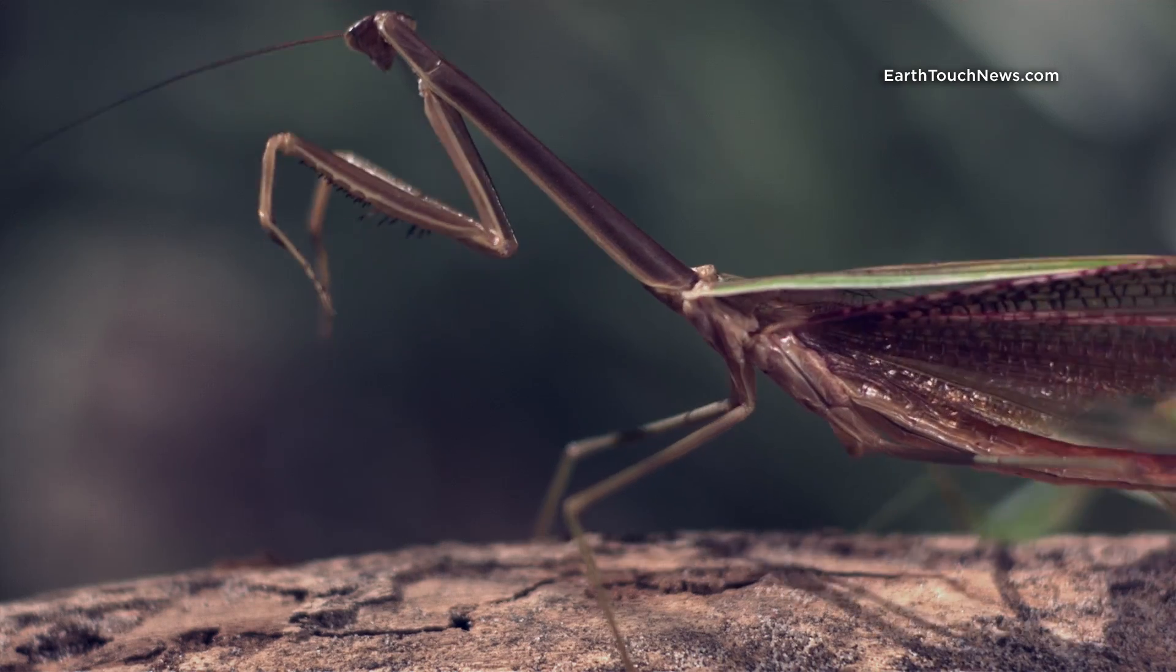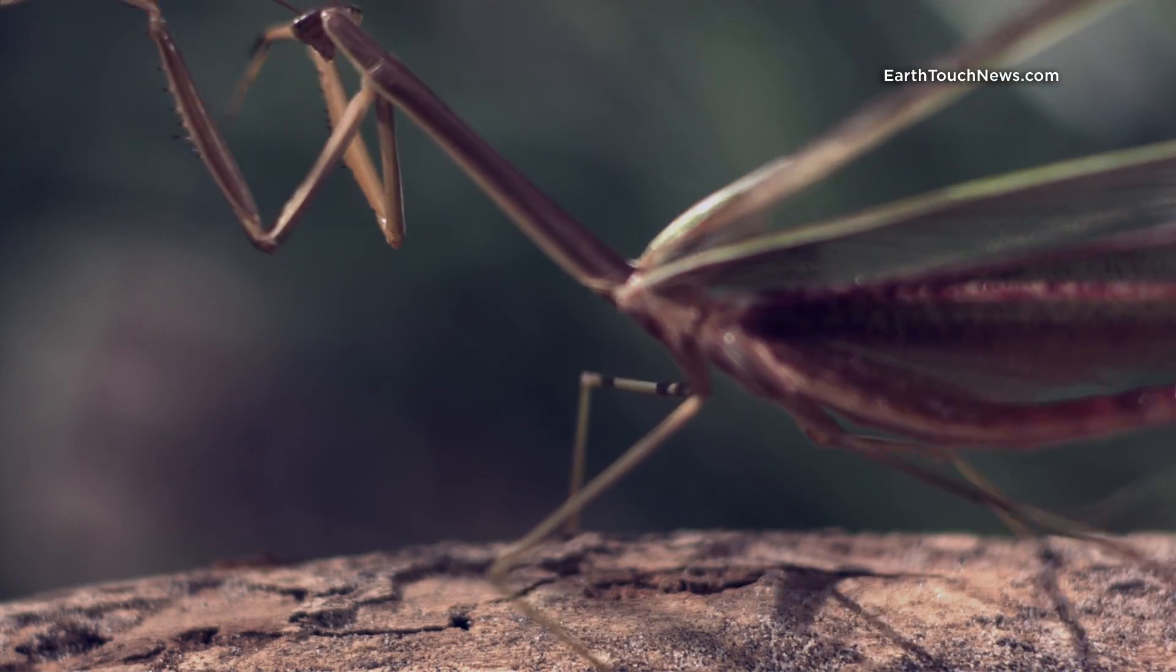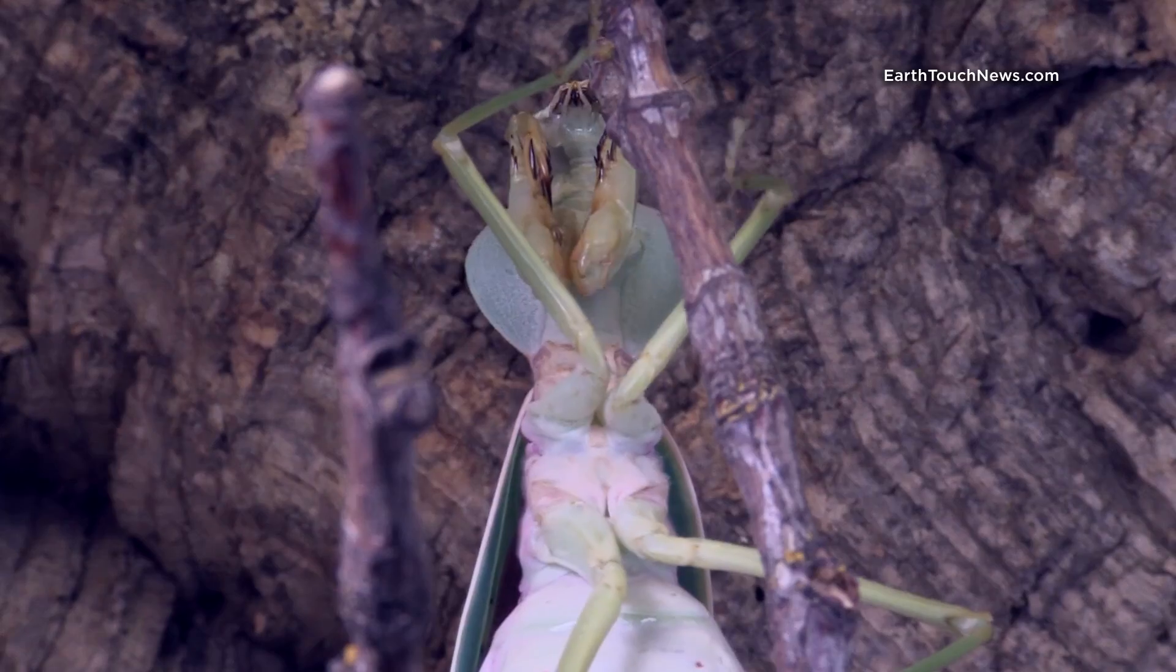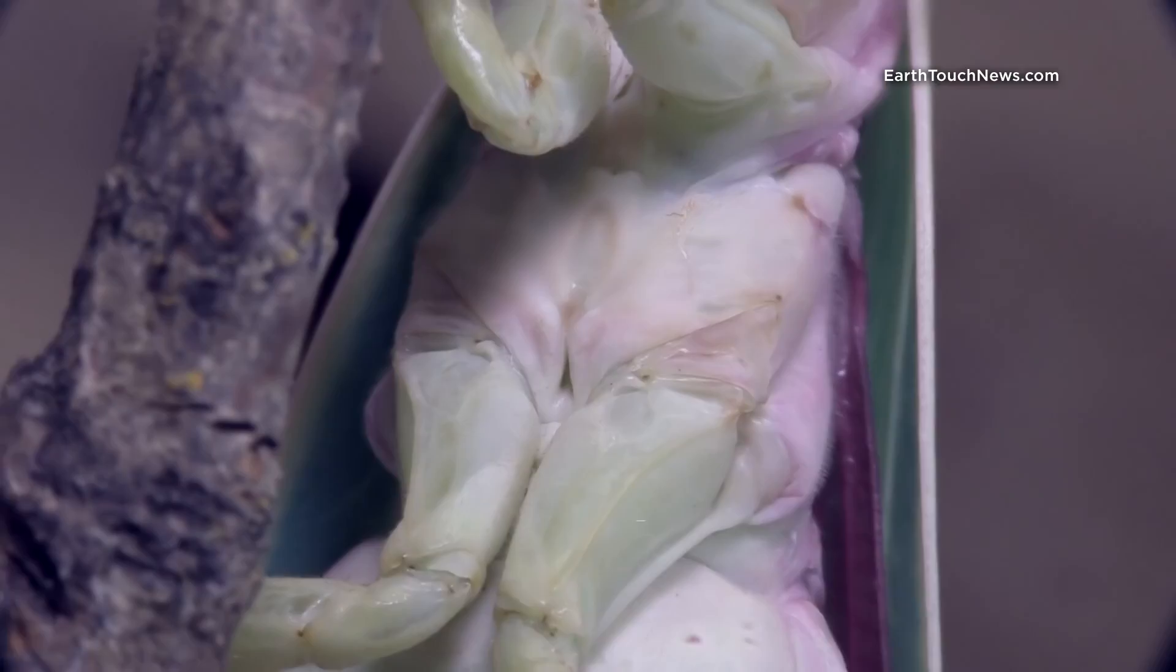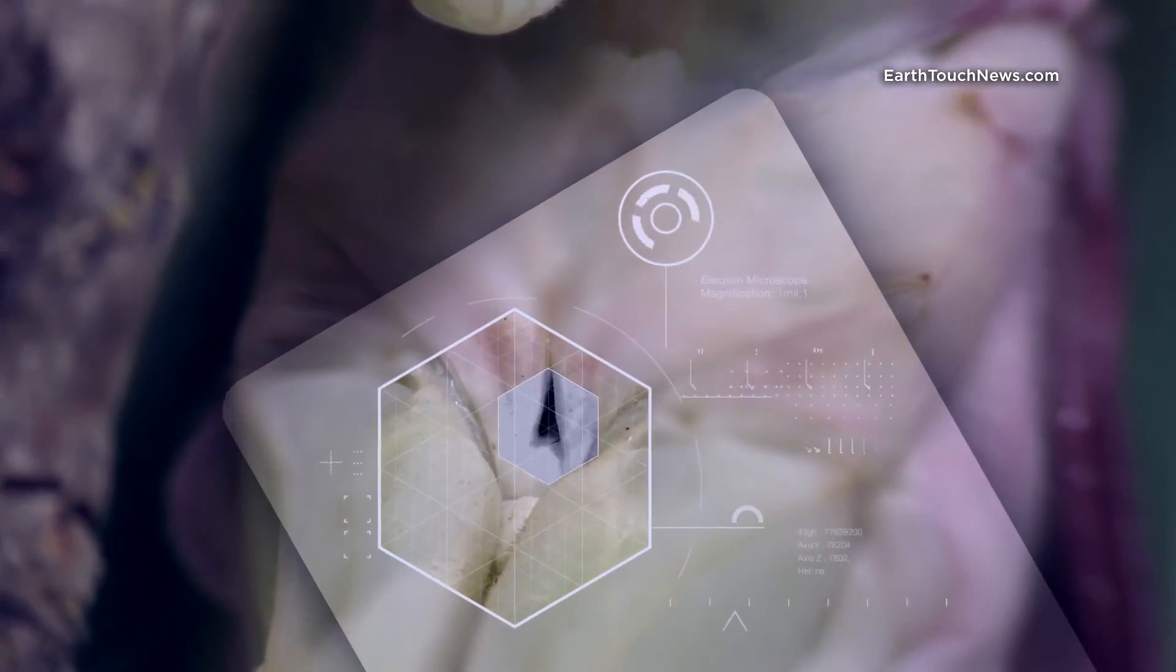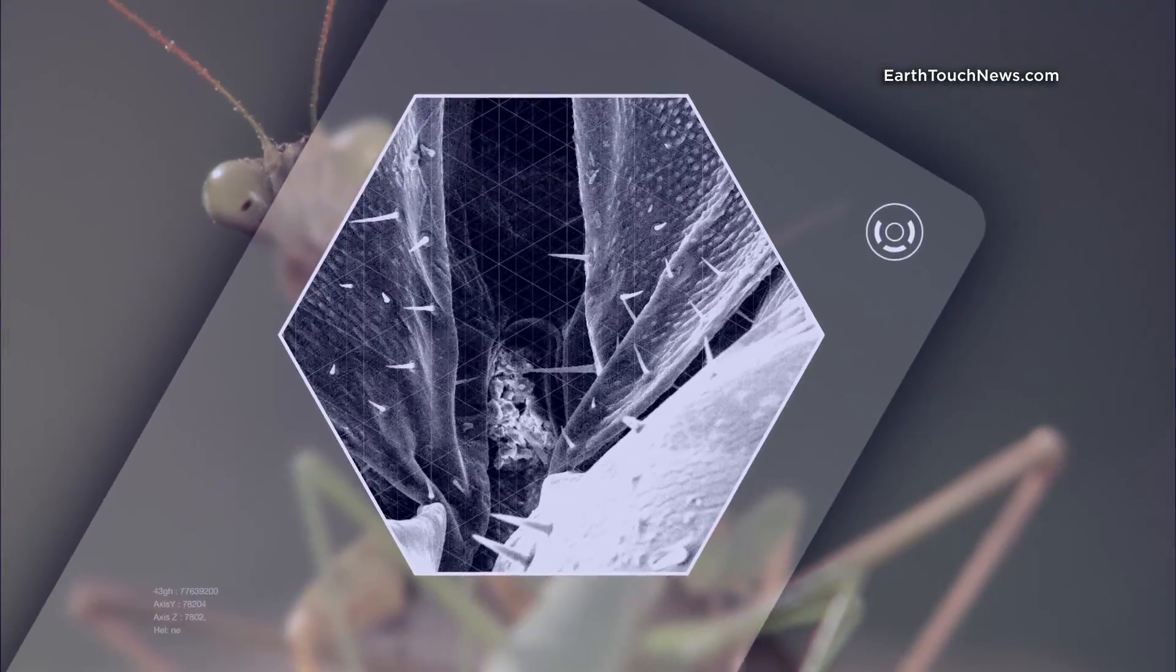Flying praying mantids have mortal enemies: bats. But they've got a secret weapon, a single ear on their abdomens. With this organ, they can hear the ultrasound frequency or echolocation of bats. It's their emergency get-out-now signal.